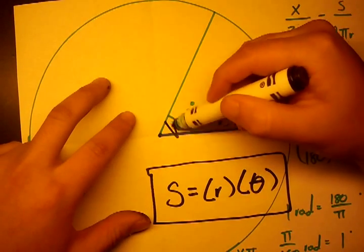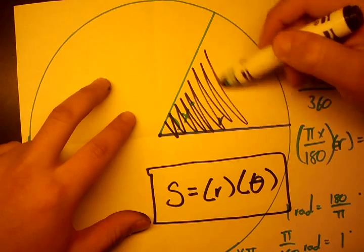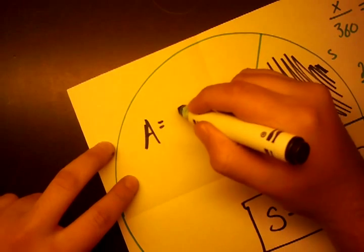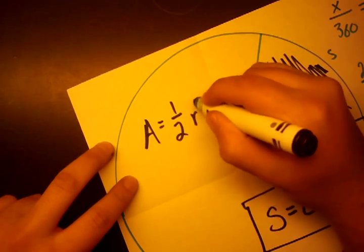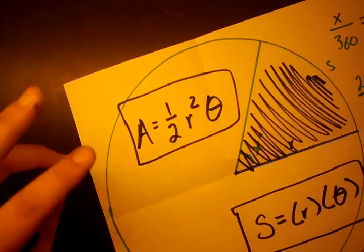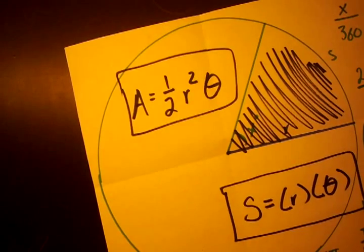And, the second one, we'll just state. So, let's say we wish to find the area of this sector. Here, the area of the sector is given by 1/2 r² θ. Where that θ is again measured in radians.